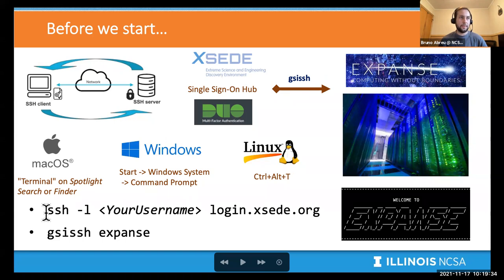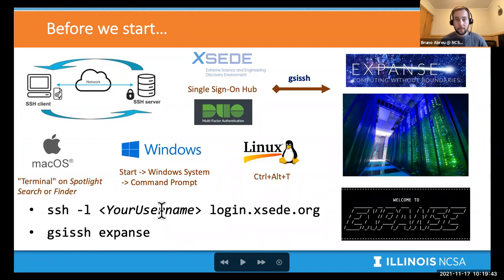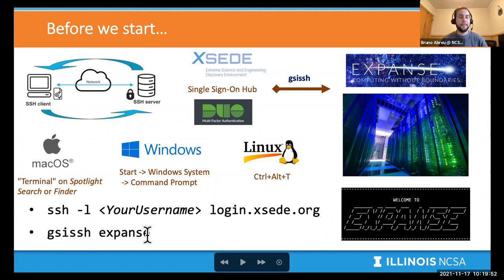The first step is connecting to the hub. SSH with a dash L — that's a letter L, not the number one. Then your XSEED username — the one you used when you created your XSEED account — and then login.xseed.org. Once you're there, you do just the GSI SSH Expanse. I'm going to do that with you right now.